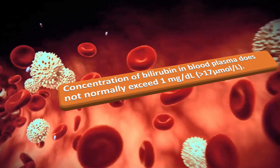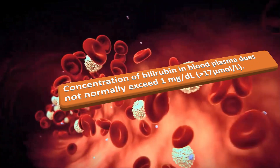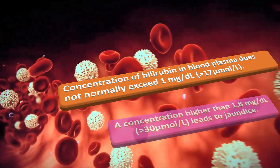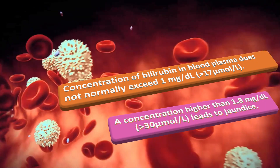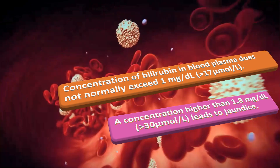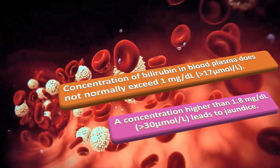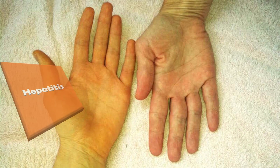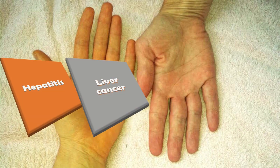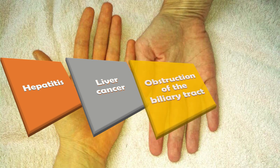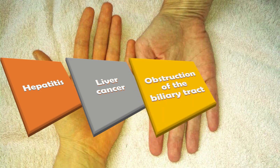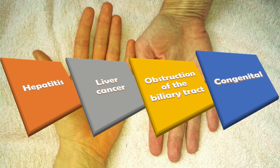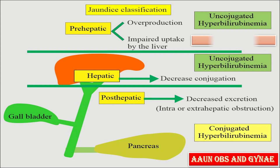Concentration of bilirubin in the blood plasma does not normally exceed 1 mg/dL. A concentration higher than 1 mg/dL or more than 30 micromoles per liter leads to jaundice. Jaundice is often seen in liver diseases such as hepatitis or liver cancer. It may also be caused by obstruction of the biliary tract — for example, by gallstones or pancreatic cancer — or less commonly be congenital in origin.